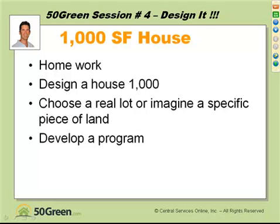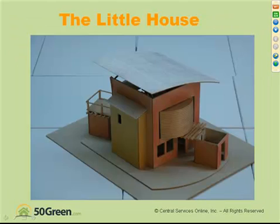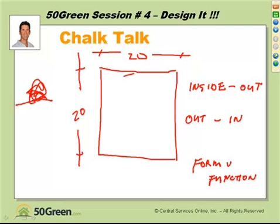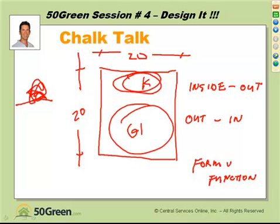Let's get back to our thousand square foot house — the homework that we talked about. What's green? You might ask, what's green? Here's the little house that I designed, obviously very contemporary and unique. You might ask, what is green about this house? Well, the first floor is going to be sort of a kitchen and a great room. That's as simple — or as difficult — as the circle planning got.